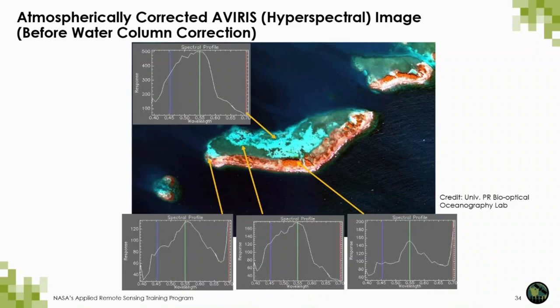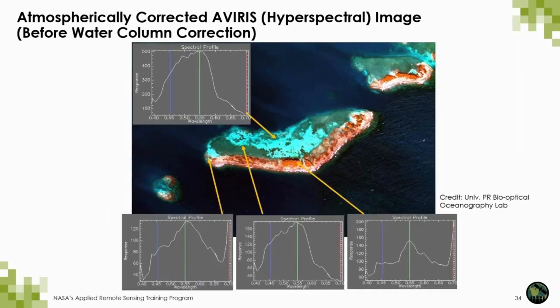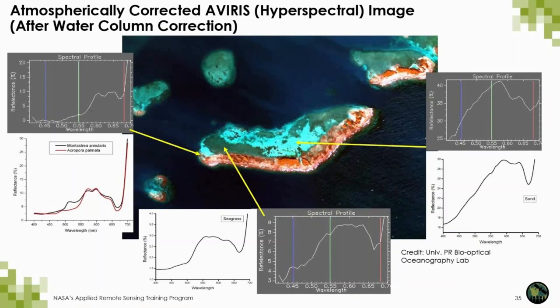Here is the image before the water column correction — the same slide shown before — and here is the difference once it was corrected for the water column. The coral signal looks very different before versus after the water column correction, and it is actually relatively similar to what is collected in the field. The sandy area correction is really similar. The same applies to seagrasses. It's not perfectly similar because of differences in spectral resolution between the in-situ sensor and the AVIRIS sensor, and remember this was an exercise to correct for the water column, which is changing on a nearly constant basis.